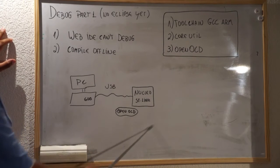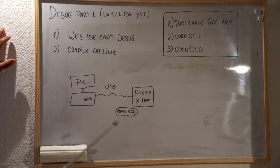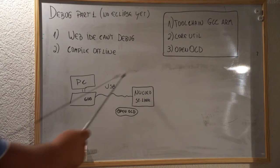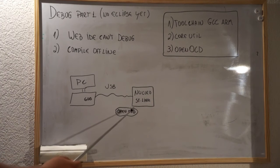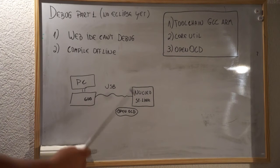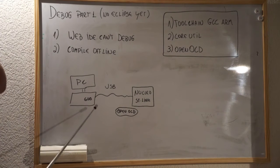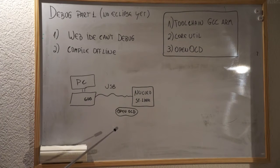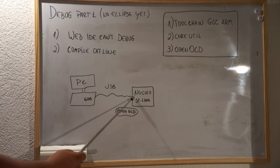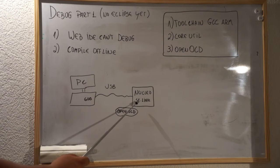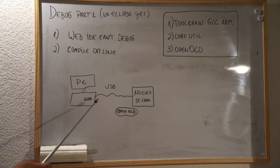This is just a simple diagram that explains how your computer is connected to the Nucleo board. The Nucleo board has only one USB connector, and through this USB connector we can have the serial port and the interface to program and debug. In order to debug the Nucleo board, we need a tool called OpenOCD, that is going to be the bridge between our ST-Link — which is the interface used to program and debug the Nucleo board — and GDB, which is the GNU debugger.